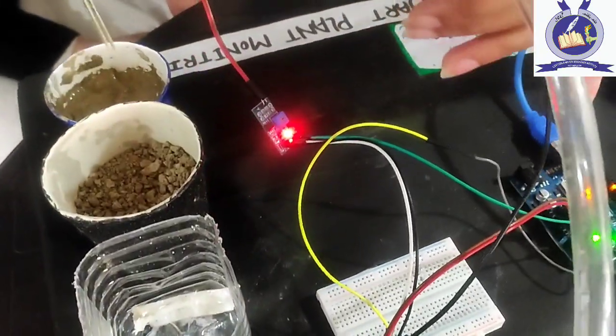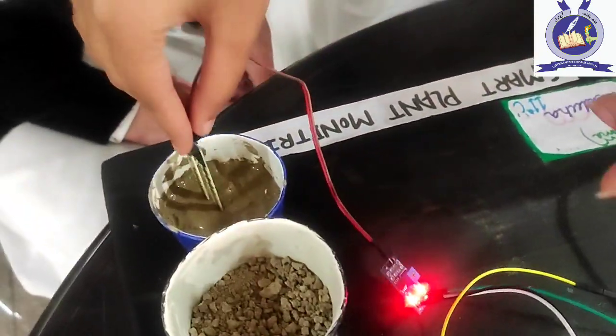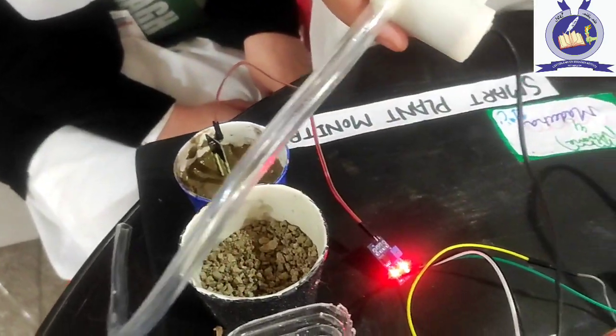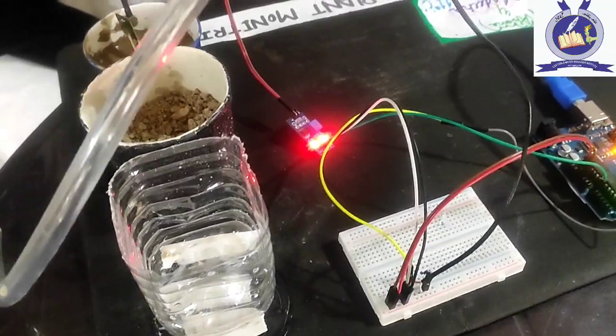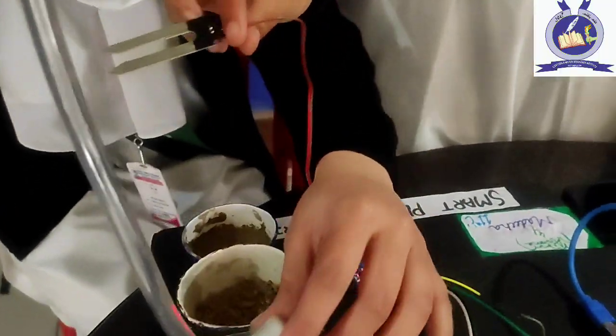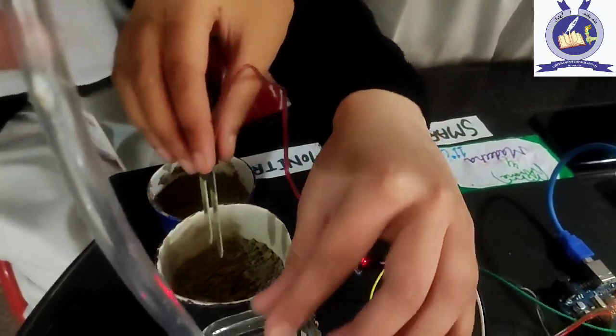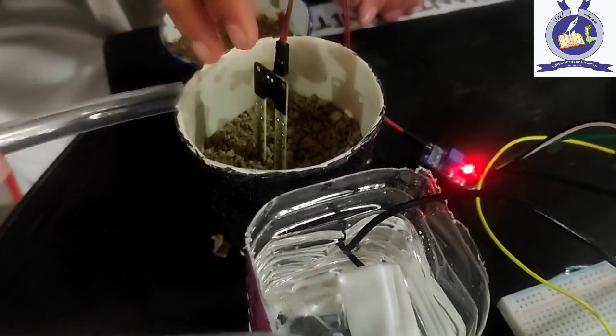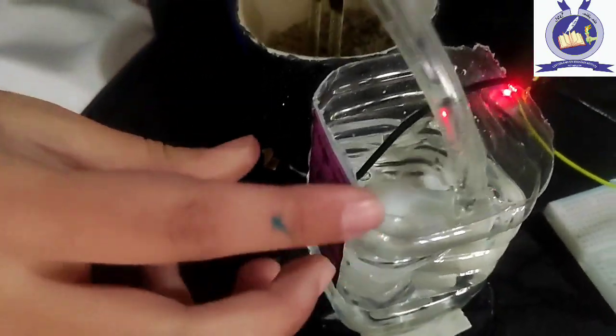If the soil is wet and the water is not needed, it will turn off. Please leave the water to the soil and put down the soil moisture sensor.